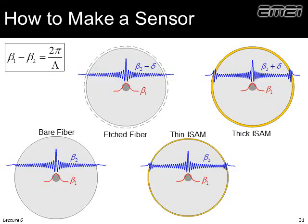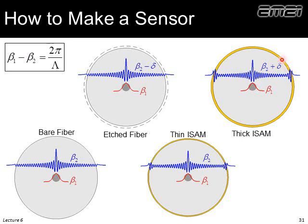Here's how it works. We start with our conventional core mode — that never changes — and the cladding mode. We etch the fiber: the core mode stays the same because its field decays very quickly and is incredibly small even close to the core, but the cladding mode changes a little bit since there's now less material, lowering its propagation constant by some small delta. Then the ISAM film is grown onto the outside — there's a slight transfer of power to the ISAM film since it probably has a higher refractive index — and we grow the ISAM film until we bring the propagation constant back to where it was. A thicker ISAM shifts the propagation constant even more and more power shifts to the outside of the fiber.